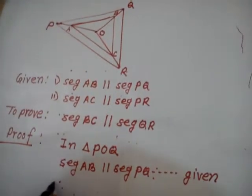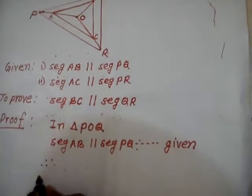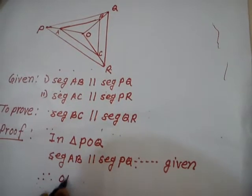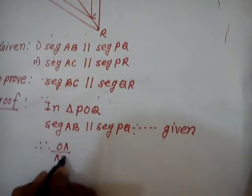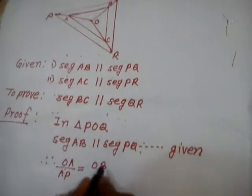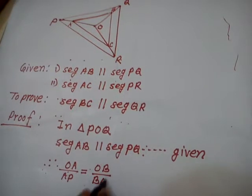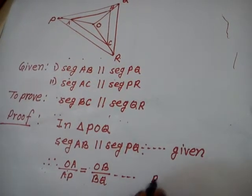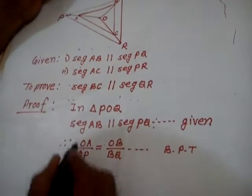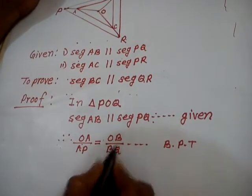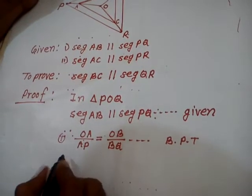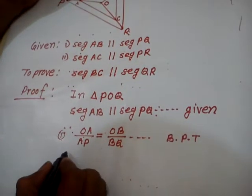Therefore, we can write. What we can write? OA upon AP is equal to OB upon BQ. This one is the first statement. Now, similarly, another triangle.